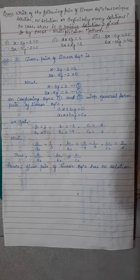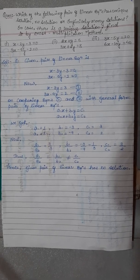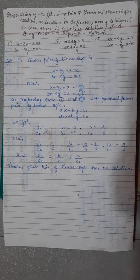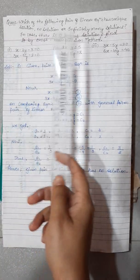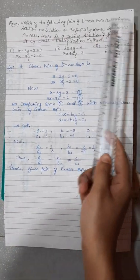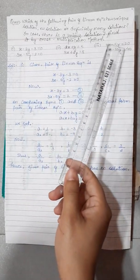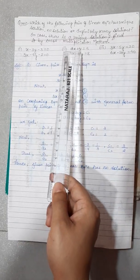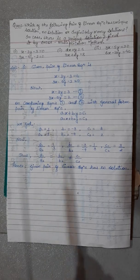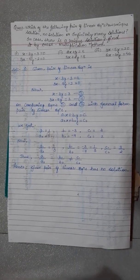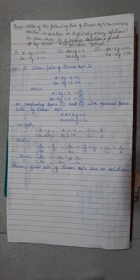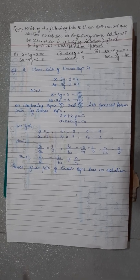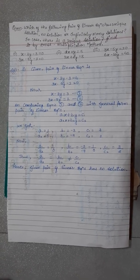Now, based on what we have studied so far, let's solve some questions using these conditions. The question is: which of the following pair of equations has a unique solution, no solution, or infinite solutions? In case there is a unique solution, find it by the cross multiplication method.